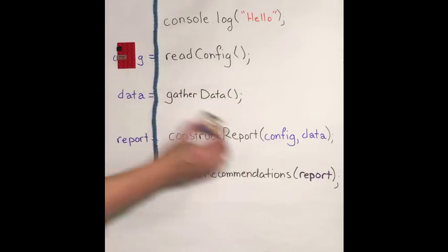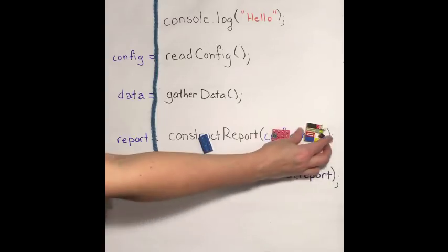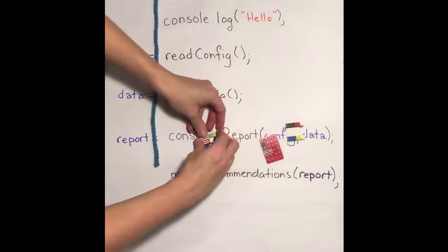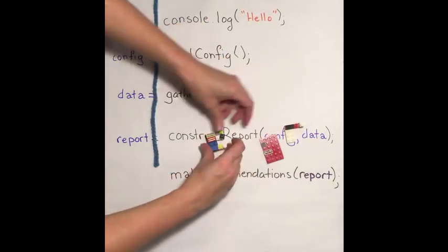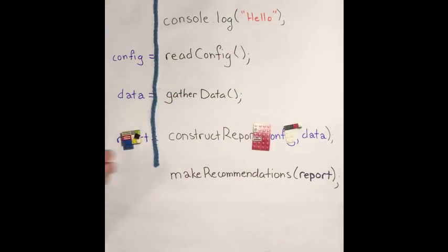and then we pass the data and the config into this construct report function, which selects the relevant pieces of data, puts them together, and pops them out as a report,